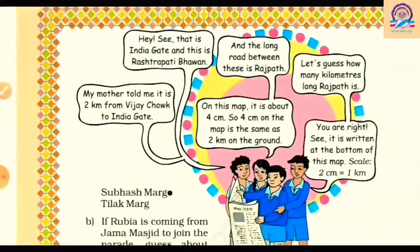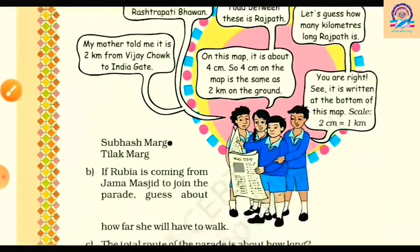Some friends are discussing the map. One says: see that India Gate and this is Rashtrapati Bhavan, and the long road between them is Rajpath. Another asks how many kilometres long Rajpath is. One friend says his mother told him it is 2 km from Vijay Chowk to India Gate, and on this map it is about 4 cm. So 4 cm on the map equals 2 km on the ground — which is confirmed at the bottom of the map: 2 cm equals 1 km.